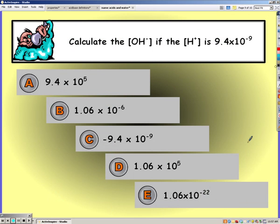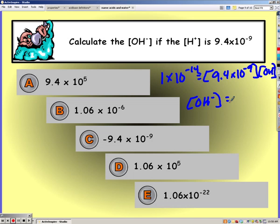Go ahead and pause the video and try this one on your own. So plugging it in your equation. And you do need to show work on these, just as I'm showing here. For hydroxide, you should get 1.06 times 10 to the negative 6th or B. And finally, our [OH-] is negative 6, hydrogen negative 9, so it must be a base.